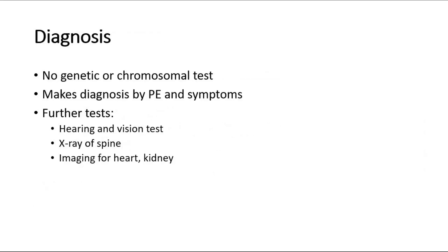To diagnose Goldenhar Syndrome, there is no specific genetic or chromosomal test to identify the syndrome. The doctor makes the diagnosis by examining the infant or child and identifying the symptoms. When it is diagnosed, the child usually needs further tests such as hearing and vision tests, and also an X-ray of the spine to check for problems with the vertebrae. To look for heart or kidney problems, imaging investigations might be needed.